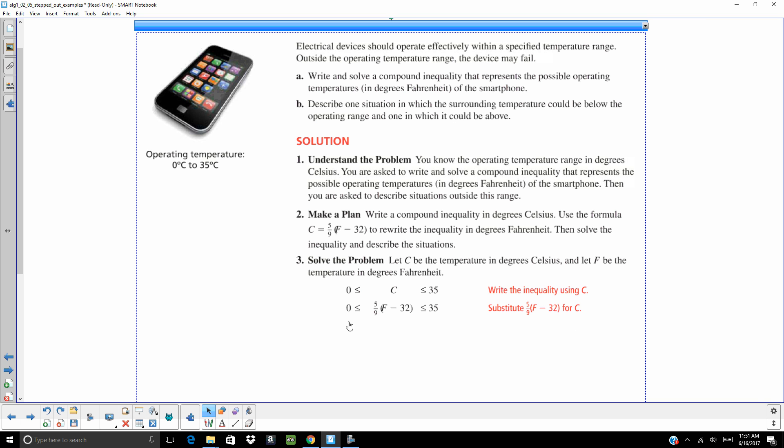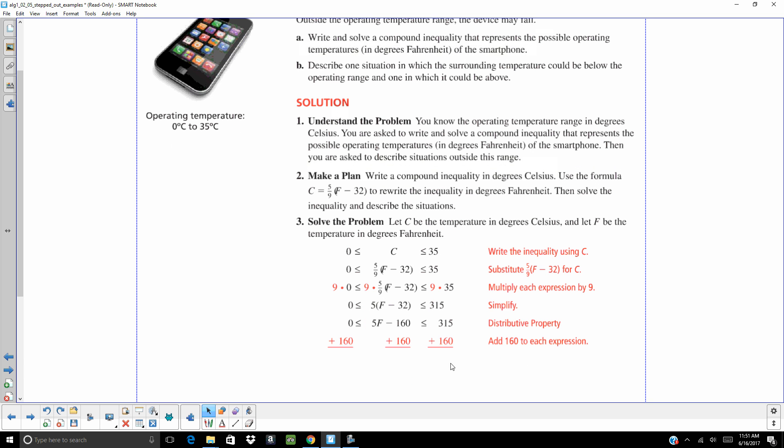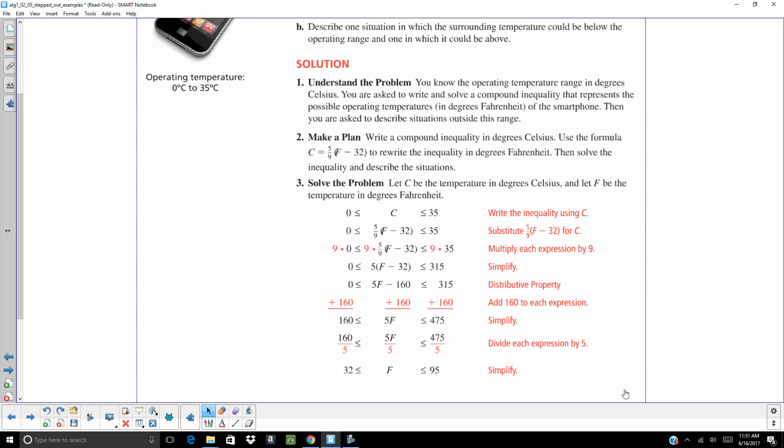So it has to be greater than zero, less than 35. And C is the same thing as 5 ninths times quantity F minus 32. So to get rid of that 5 ninths, get rid of that denominator, multiply each term by 9. Now to get rid of that 5, we're going to divide each term. We're going to distribute first. Add 160. Now we're going to divide by 5.